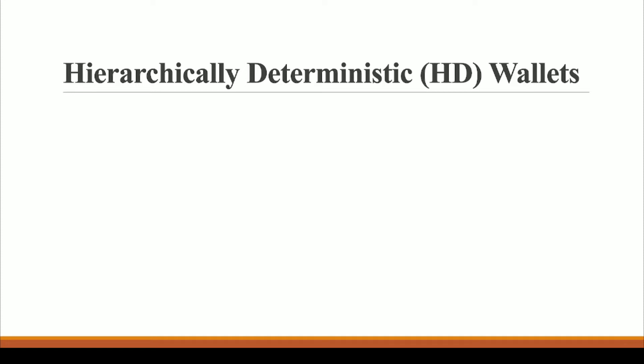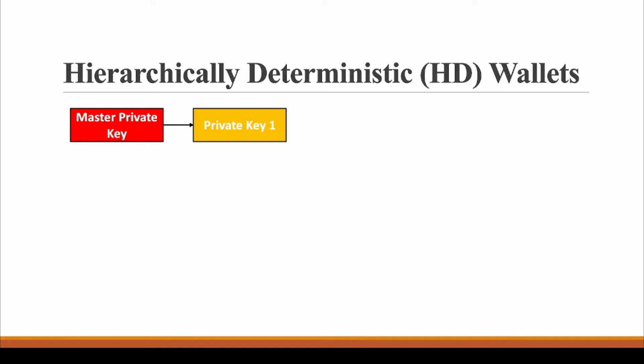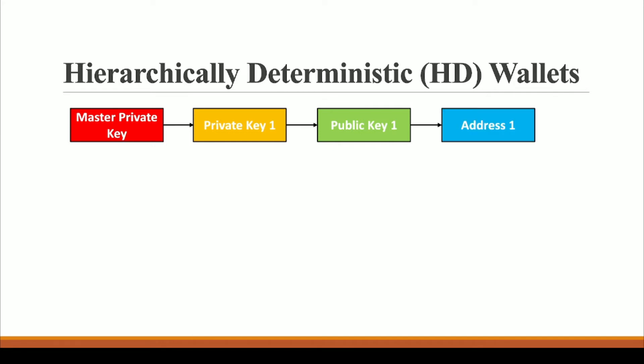Early cryptocurrency wallets only gave us the functionality of having one Bitcoin address, and as I said, the problem was that anybody could easily find out the type of transactions you are doing. With the help of an HD Wallet, we now have a master private key. This HD Wallet provides us with a master private key, which is used to generate a private key, which is then used to generate a public key, and from that we can generate a Bitcoin address.